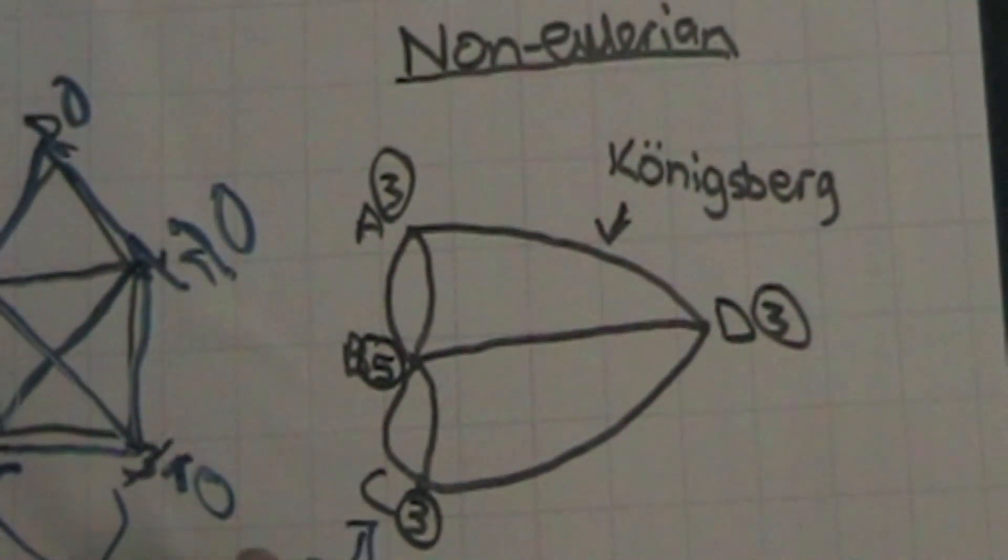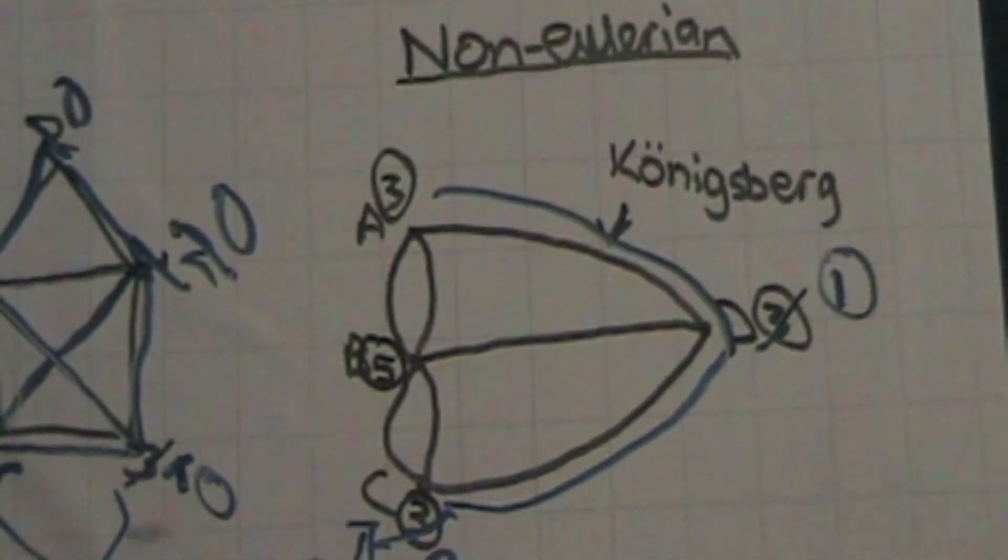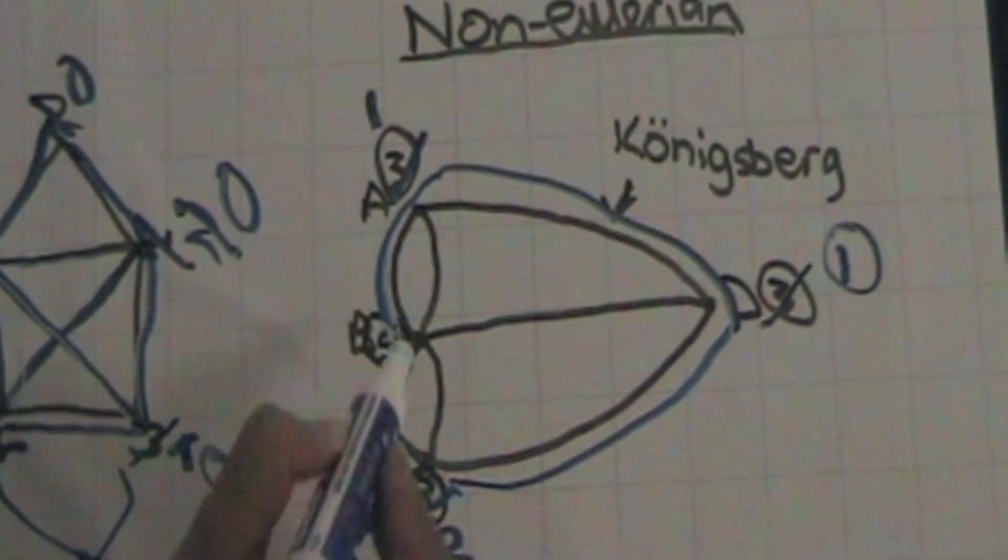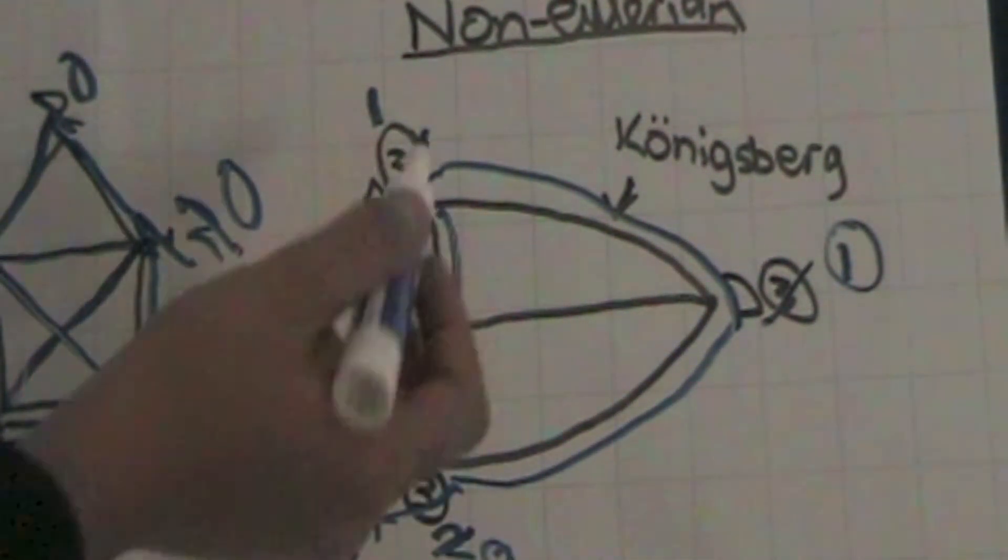We have seen that we can only use odd vertices as our starting end points. So we will always have some paths left over. If we use C as our start, then D goes left with one. So we need to finish there. But if we go through A, that goes to one as well. So we need to finish there too. And carrying on, B goes down to one as well. So we have three places we need to finish, which is impossible.